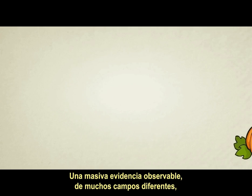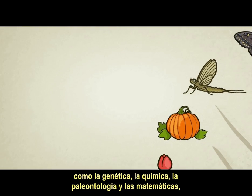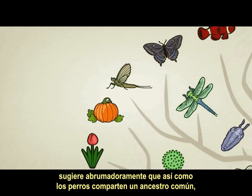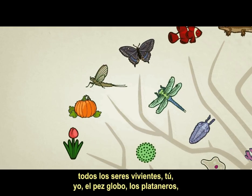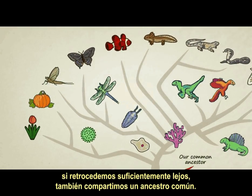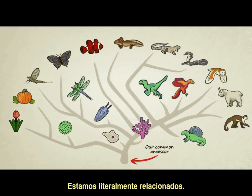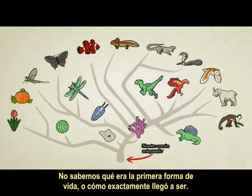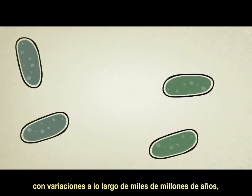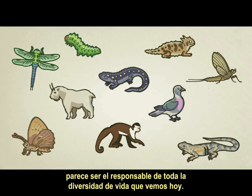A massive amount of observable evidence from many different fields — such as genetics, chemistry, paleontology, and mathematics — overwhelmingly suggests that just like all dogs share a common ancestor, all living things: me, you, pufferfish, banana trees — if you go back far enough — also share a common ancestor. We are literally related. We don't know what the first life form was or exactly how it came to be, but the simple process of reproduction with variation over billions of years looks to be responsible for all the diversity of life we see today.